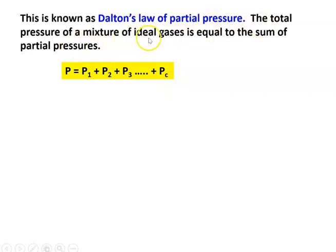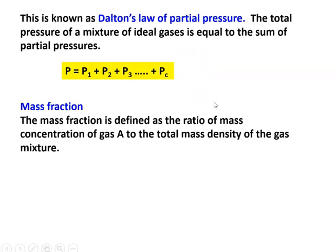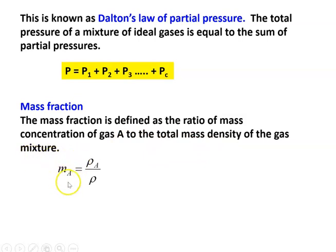The total pressure of a mixture of ideal gases is equal to the sum of the partial pressures — that is Dalton's law of partial pressure. Mass fraction is defined as the ratio of the mass concentration of gas A divided by the mass density of the gaseous mixture: mass fraction = ρ_A / ρ, or RM1 = ρ1 / ρ.